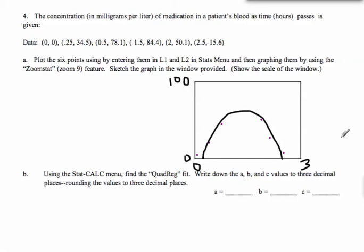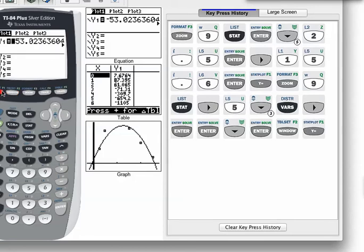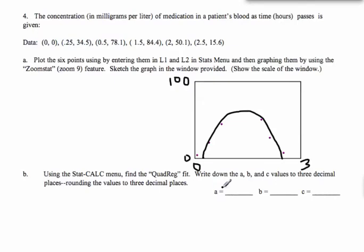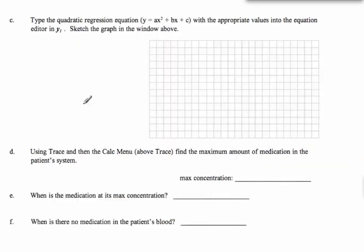When we do the QuadReg, we're going to write down these values to three decimal places. Bring back the calculator — that QuadReg is right here: a equals negative 53.024. You're going to write down your a, b, and c numbers right there. It says type the quadratic regression with the appropriate values into the equation editor. I've done the shortcut method, but you can definitely write them down — if you go to even two decimal places, you'll be fine.